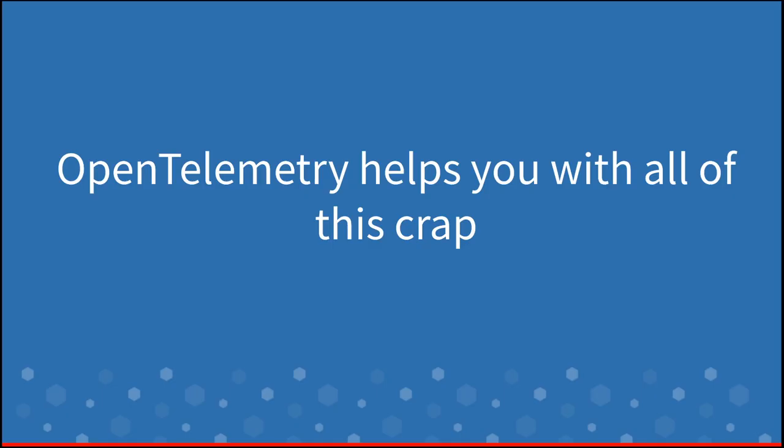OpenTelemetry is a specification that describes how you instrument your code to figure out what's going on in your application from the outside. That's what we do with monitoring — we open a dashboard, we look at logs, but we're outside looking at the inside state of the application. That is the definition of observability in control theory: trying to figure out what's going on inside a system from the outside.